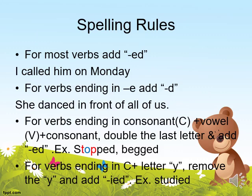For spelling rules: for most verbs, add -ed — I called him. For verbs ending in -e, add -d — she danced. For verbs ending in consonant-vowel-consonant, double the last letter and add -ed — stop becomes stopped, beg becomes begged. For verbs ending in consonant plus -y, remove the y and add -ied — study becomes studied. But if the y is preceded by a vowel, just add -ed — play becomes played.